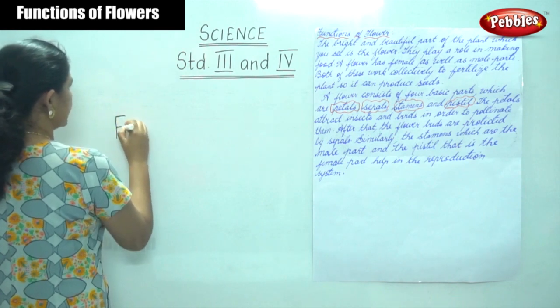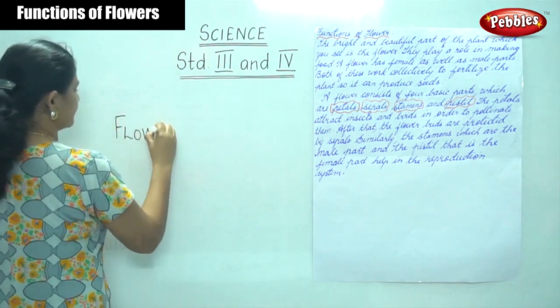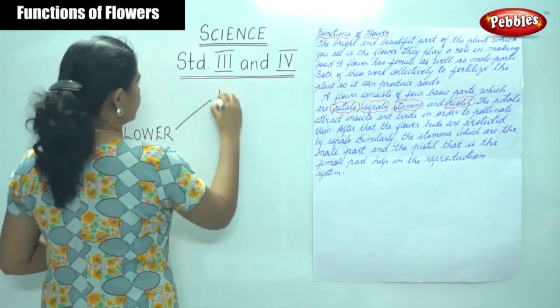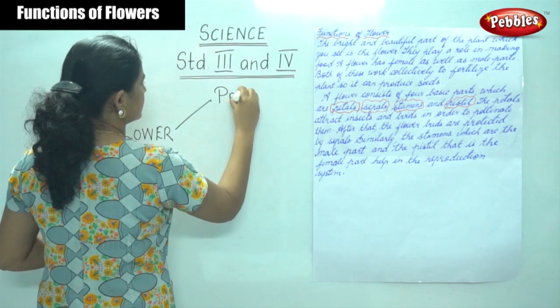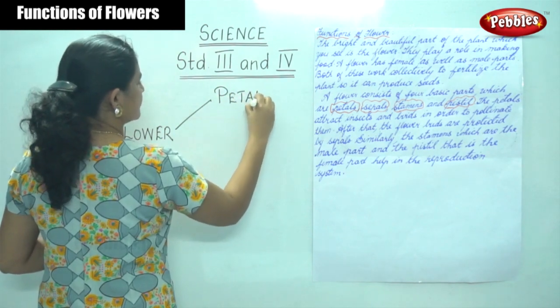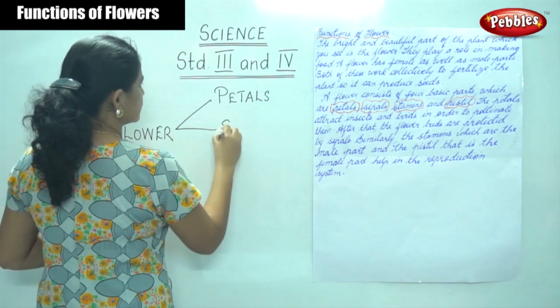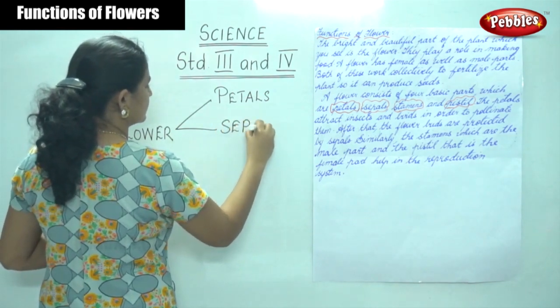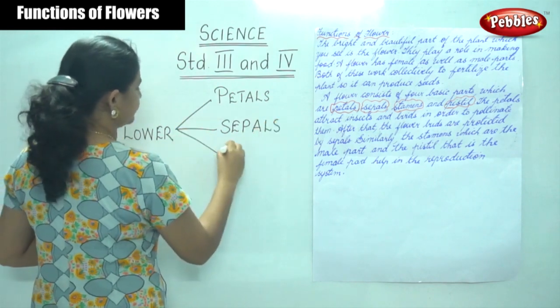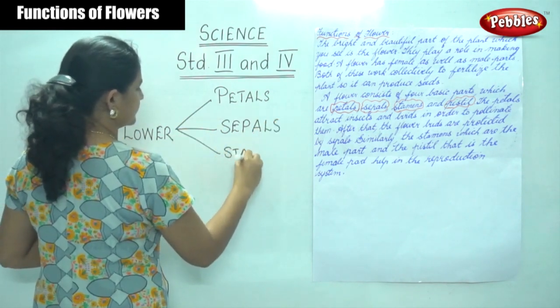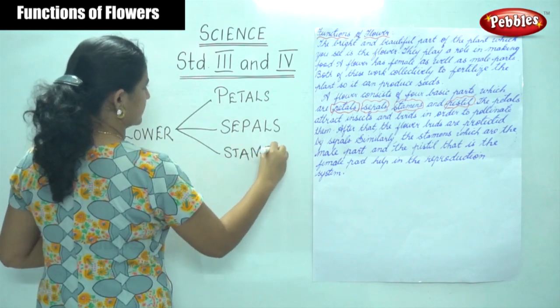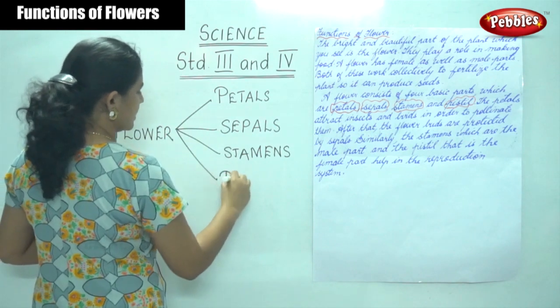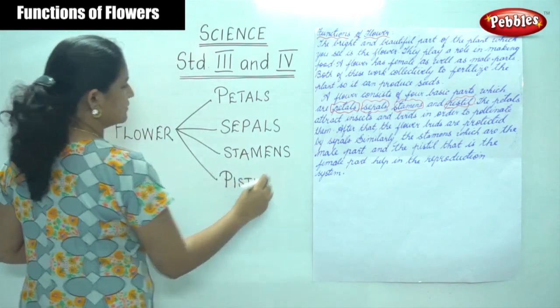The three main or the four basic parts of a flower are petals, sepals, stamens, and pistil. So these are the four basic parts of a plant.